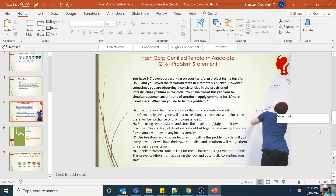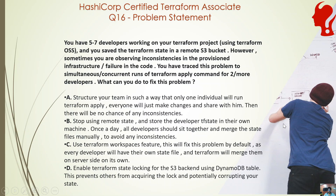Welcome back to the HashiCorp Certified Terraform Associate practice questions, question number 16. You have 5 to 7 developers working on your Terraform project using the open source version, with Terraform state saved in a remote S3 bucket using the S3 backend. Sometimes you are observing inconsistencies in the provisioned infrastructure or failures in the code, traced to simultaneous or concurrent runs of Terraform apply by two or more developers. What can you do to fix this problem?